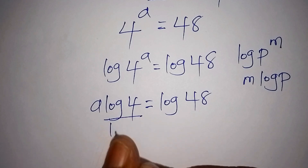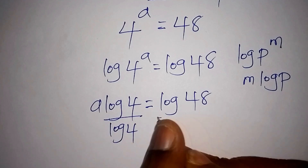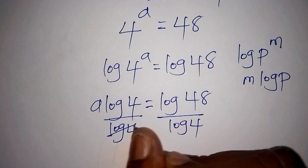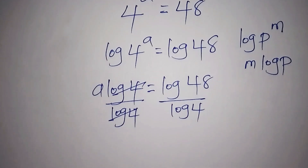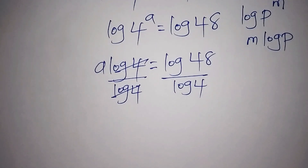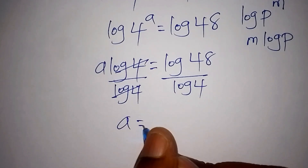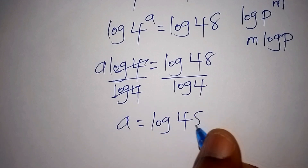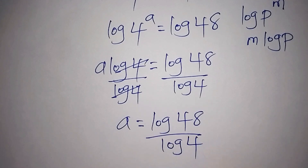From there we shall divide both sides by log of 4. Log 4 and log 4 cancel each other, so our value for a is equals to log of 48 all over log of 4.